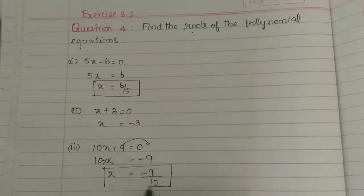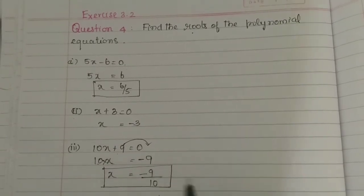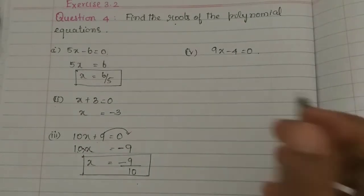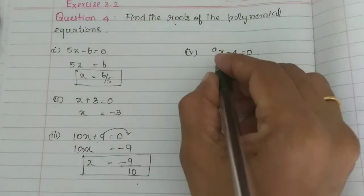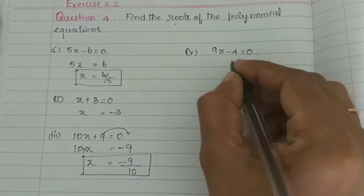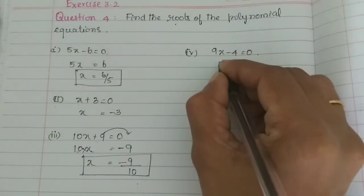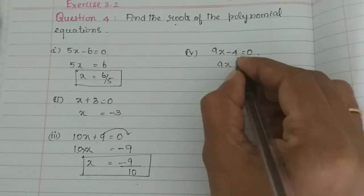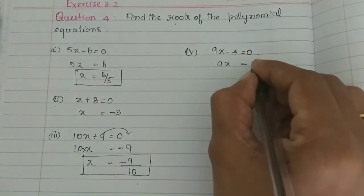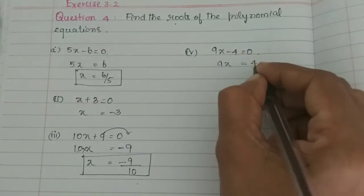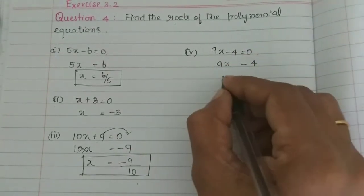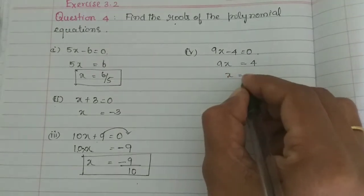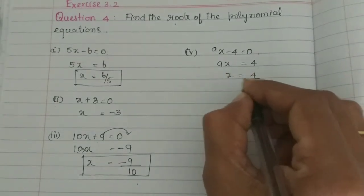The root is minus 9 by 10. Fourth subdivision: 9x minus 4 is equal to 0. So 9x is equal to plus 4, moving minus 4 to the opposite side.